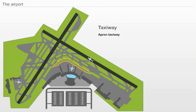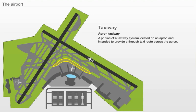B. Apron Taxiway. A portion of a taxiway system located on an apron and intended to provide a through-taxi route across the apron.